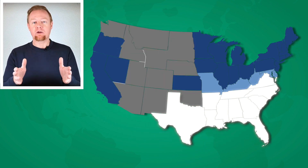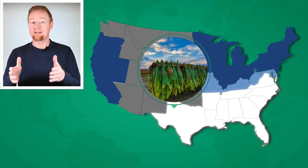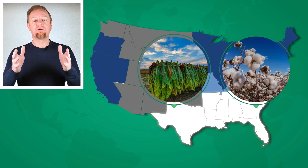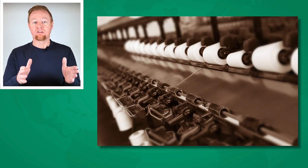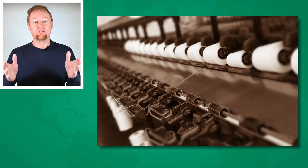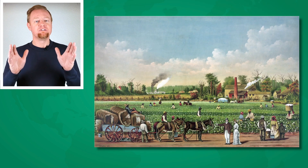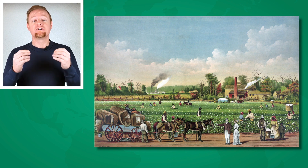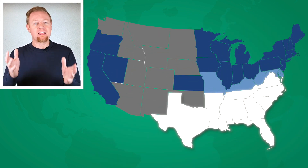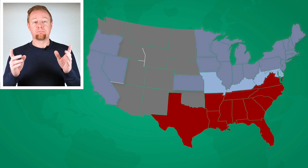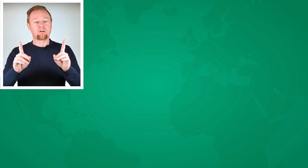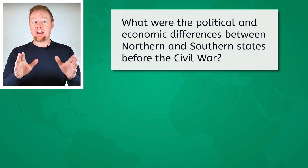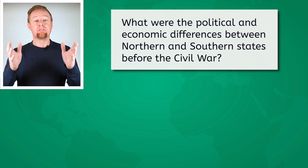The 11 southern states were heavily agrarian, producing cash crops such as tobacco and cotton. Much of this cotton was tended by almost 4 million enslaved people, or approximately half of the southern states' population. Most of this cotton would be bound for northern textile mills, driving the further industrialization of the north. Southern states generally believed that slavery as an institution should be preserved. This back and forth had played out since the founding of the nation, but what about the expansion of slavery to the western territories? What were the political and economic differences between northern and southern states before the Civil War?